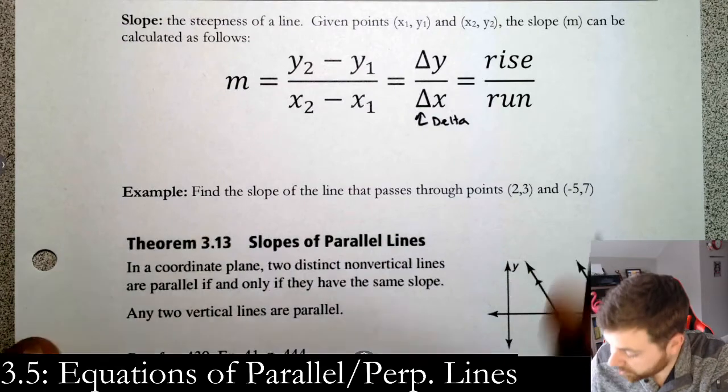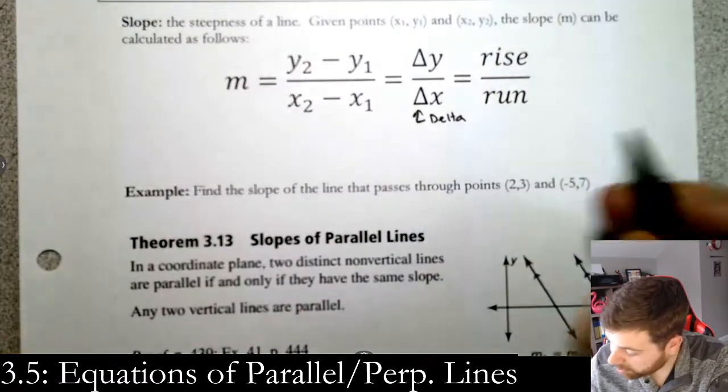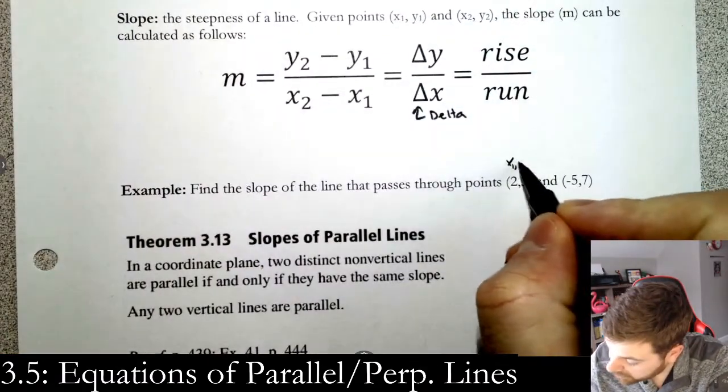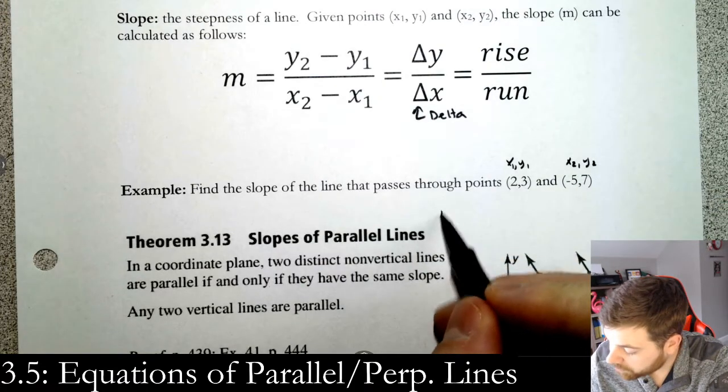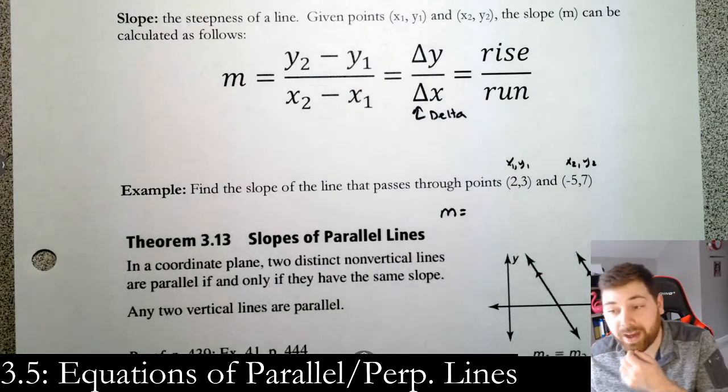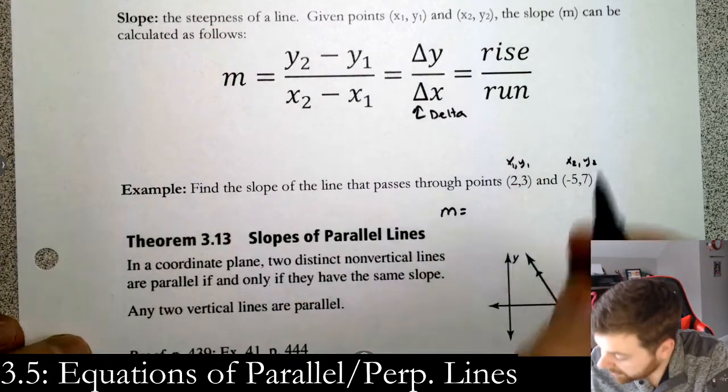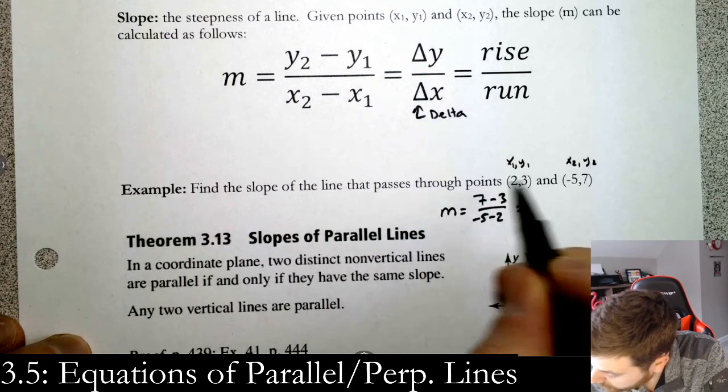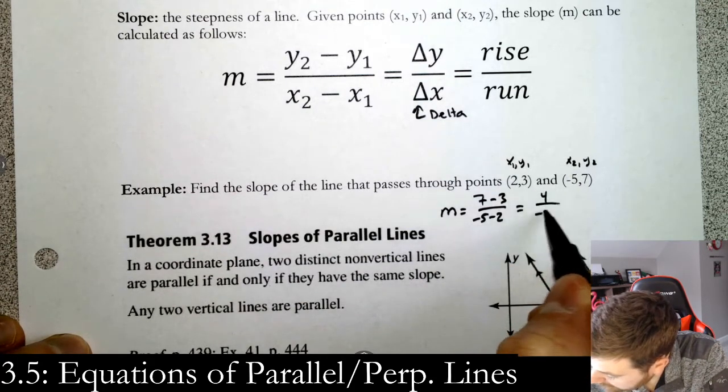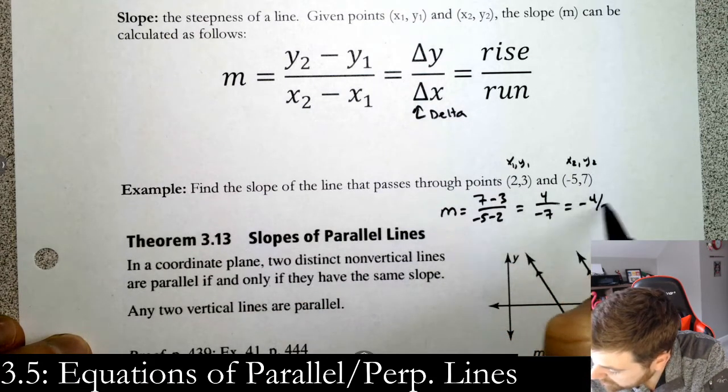Now let's find the slope of a line. If you're confused at all, call one of these x1, y1, call one x2, y2, and set up the slope formula. We use m—I don't remember why, it's just traditional. So you go 7 minus 3 over negative 5 minus 2, or 4 over negative 7, so negative 4 sevenths.